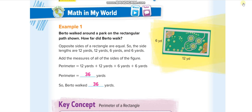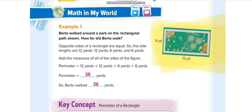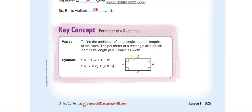So how do we find the perimeter? We add all the four sides. If this one is 6, the opposite side is also 6. If this one is 12, then this one is also 12, because opposite sides in a rectangle are the same. The formula to find the perimeter is l + w + l + w — two lengths and two widths. Or we can multiply: two times length plus two times width.